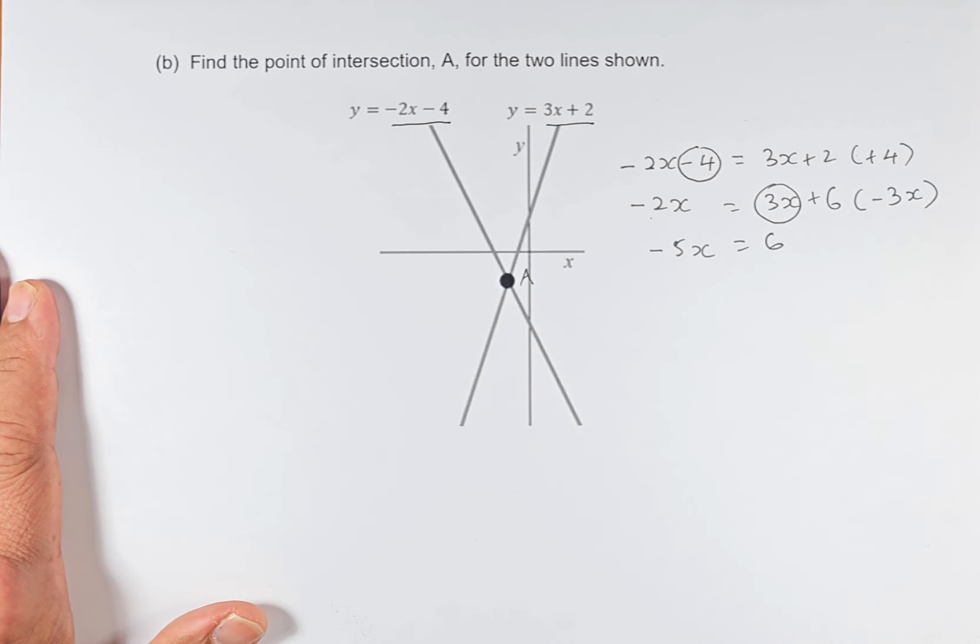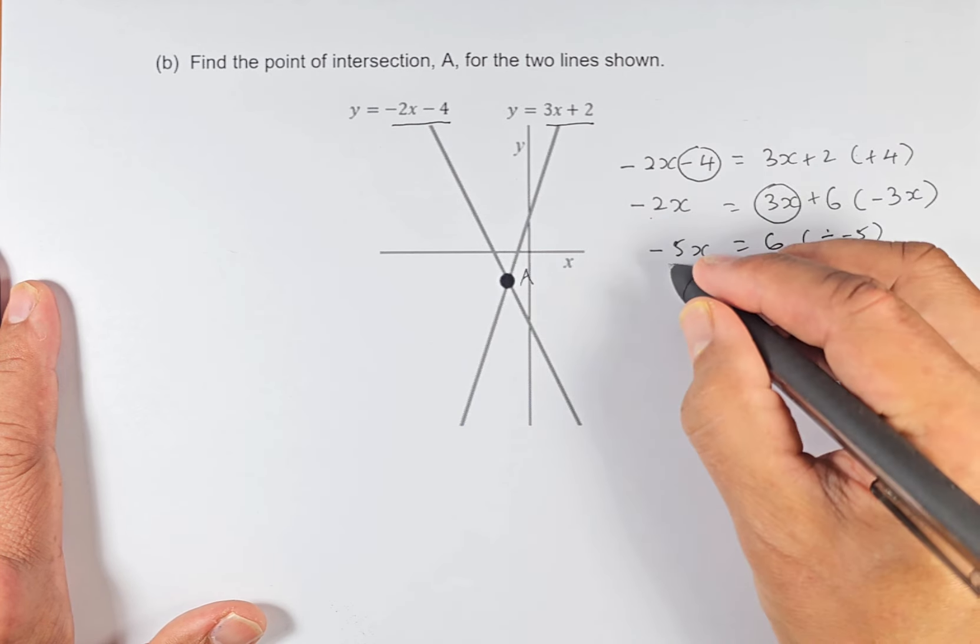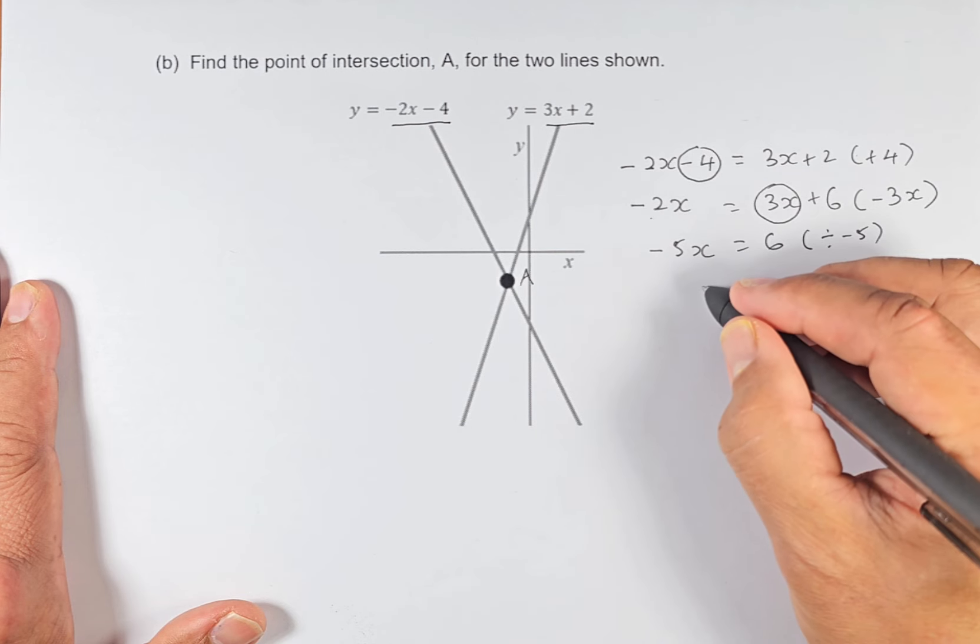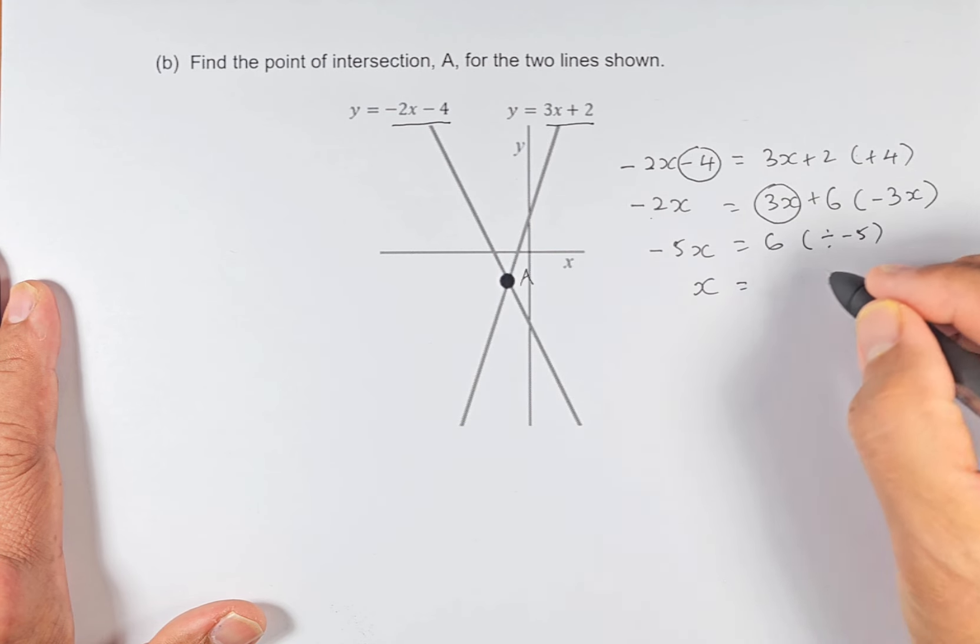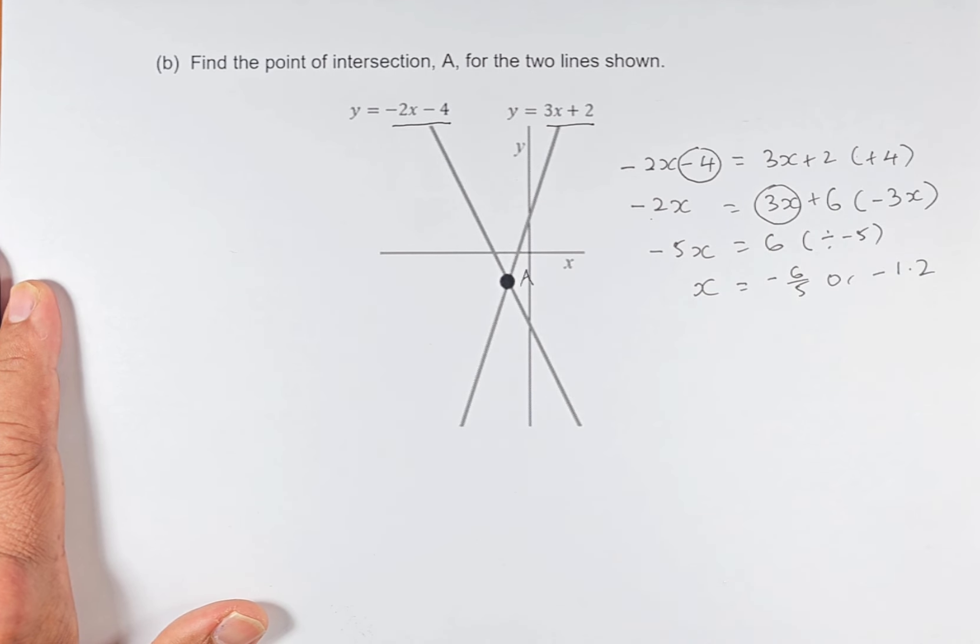Now to solve for x is very simple. -5x equals 6. We just divide by -5 on both sides. -5 divided by -5 equals 1, so on the left, we have x equals -6/5. Or if you prefer in decimal, it's -1.2. That is the first part.